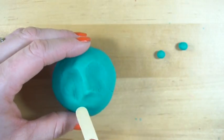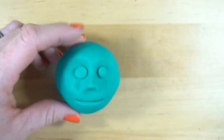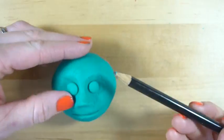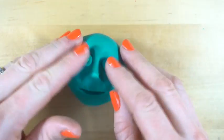Then you're going to use a popsicle stick or whatever you have to press in a mouth. And then you add to it. You can add hair, you can add eyes. You can also use a pencil to make holes in the eyes or you can use more clay to add to those eyes.